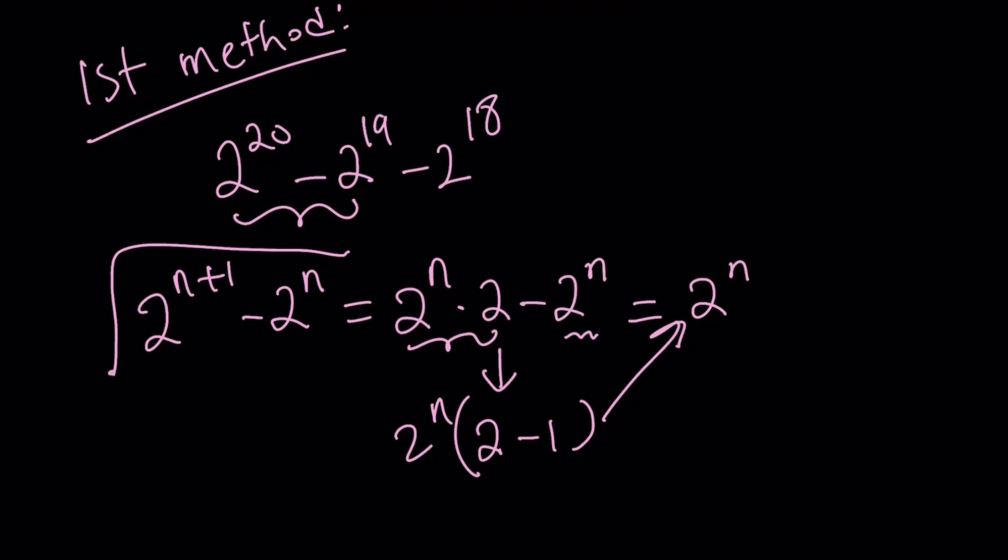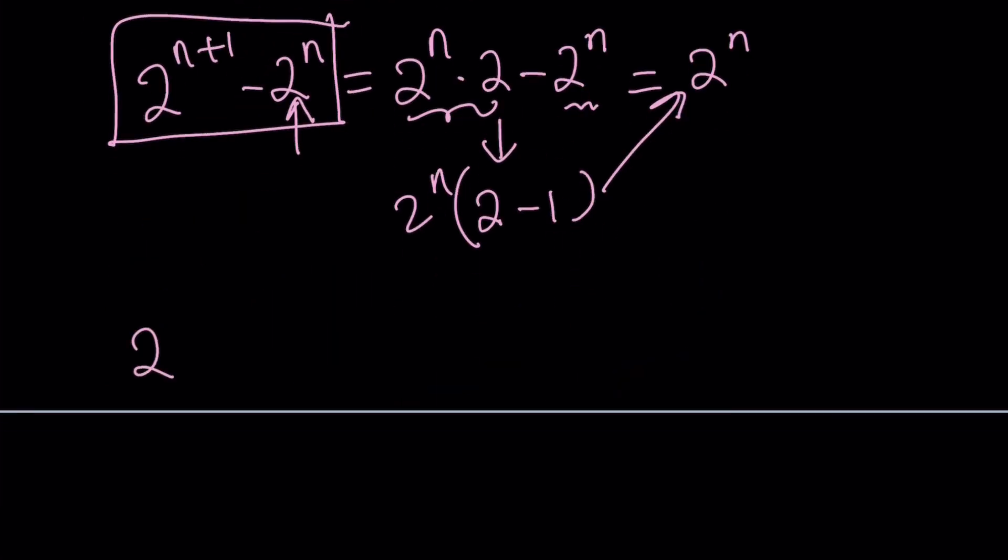If you don't see it, then you can go ahead and factor out 2 to the n and that'll give you 2 minus 1, which is the same thing as 1. So it is going to be again 2 to the power n. So let me subtract 2 to the power n plus 1 and 2 to the n. We get 2 to the n, the smaller number. Make sense?